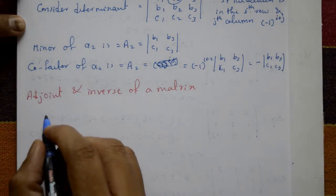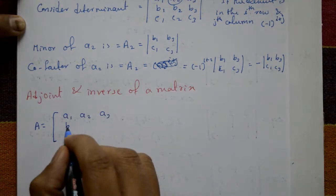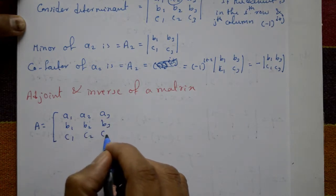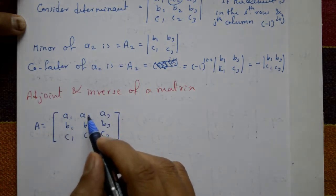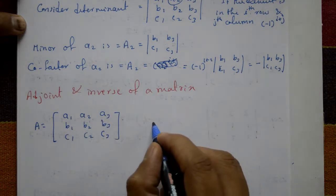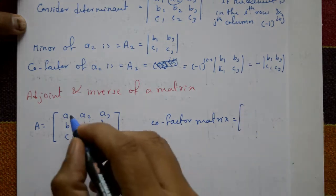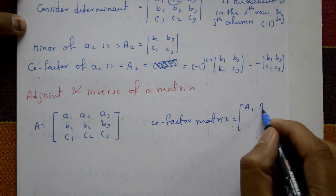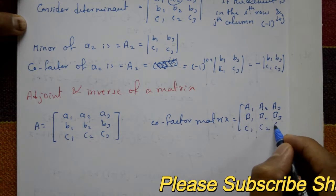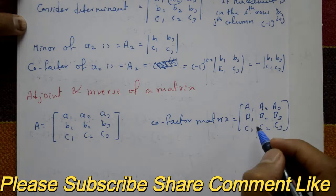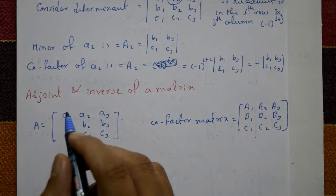Given matrix A with elements A1, A2, A3 / B1, B2, B3 / C1, C2, C3, we follow this method to build the cofactor matrix. The cofactor matrix consists of cofactors: capital A1, A2, A3 / B1, B2, B3 / C1, C2, C3 — the cofactors of each element of the original matrix. Then we find the adjoint.